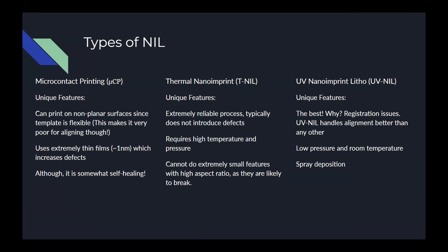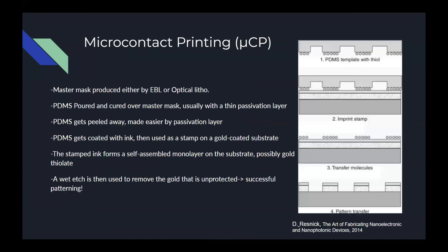Thermal has the benefit that once cooled and separated, the pattern can withstand harsh manufacturing processes. Ultraviolet is the most used nanoimprint process and is what we will focus on the most. UV nanoimprint lithography machines have extremely advanced alignment technologies. Together with their low cost, lack of high pressure and temperature, and reliability of the process, this is a very popular choice. We will come back to this later, but we will start with a deeper look into each type, starting with microcontact.